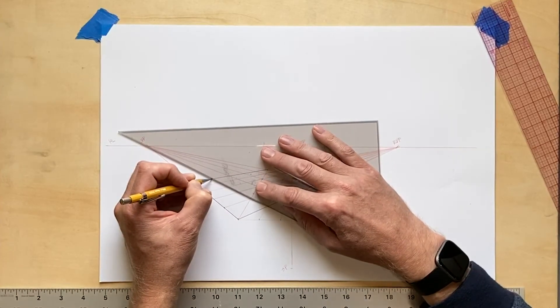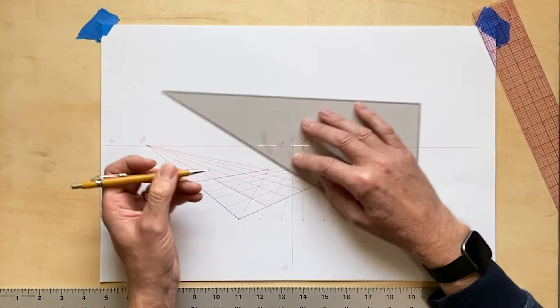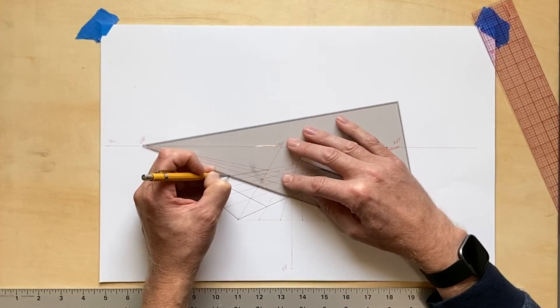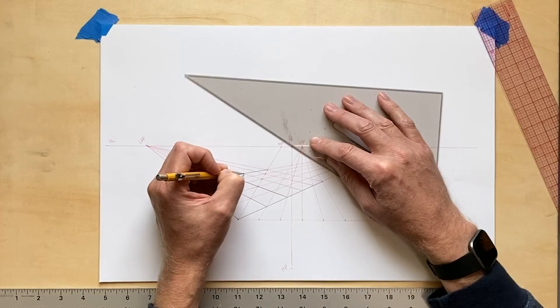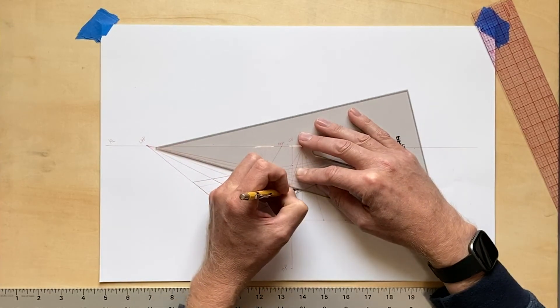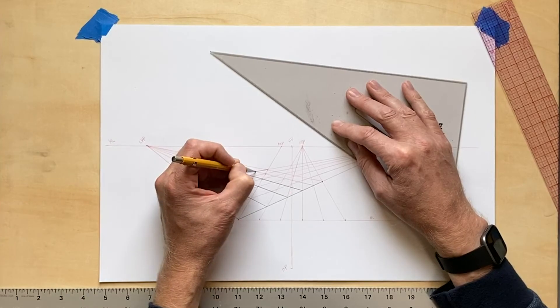One thing that you should always remember when you're working in perspective is to keep your pencils nice and sharp. If you have trouble doing this, as I've mentioned in other videos, a good way to work precisely, especially in perspective, is to utilize mechanical pencils.